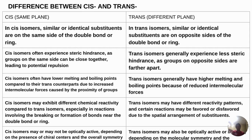To summarize the difference between cis and trans: cis isomers have similar or identical substituents on the same side, and trans isomers have similar or identical substituents on opposite sides. Cis isomers often experience steric hindrance as the groups on the same side can be close together, while trans isomers generally experience less steric hindrance as groups on opposite sides are further apart. Cis isomers often have lower melting and boiling points due to intermolecular forces, while trans isomers have higher melting and boiling points.